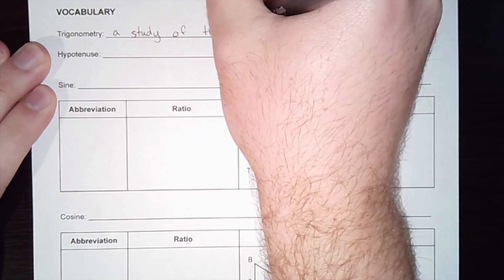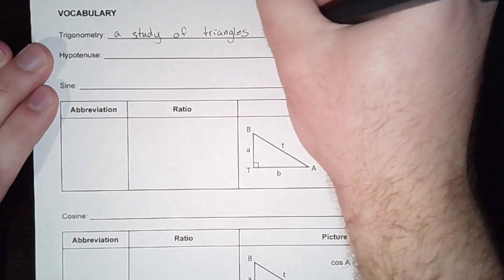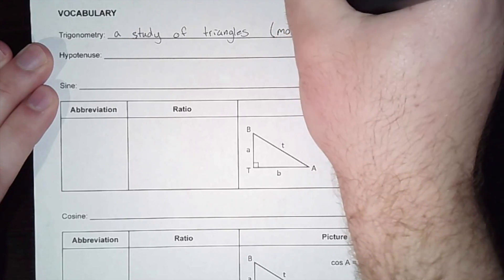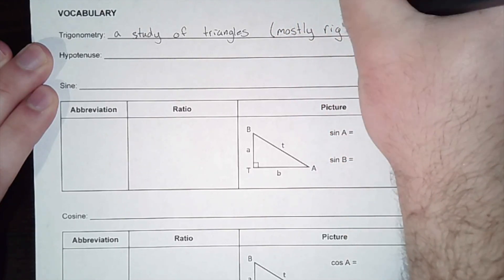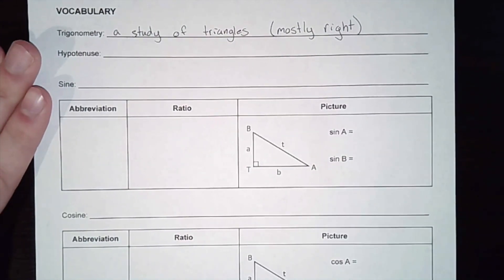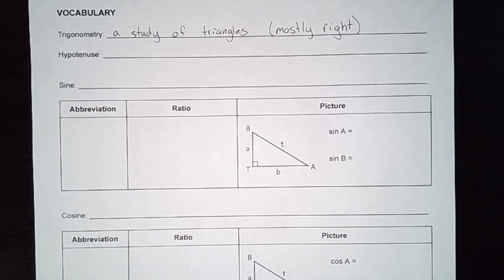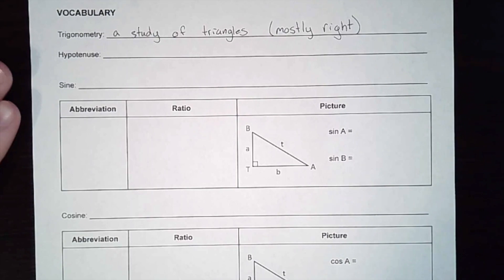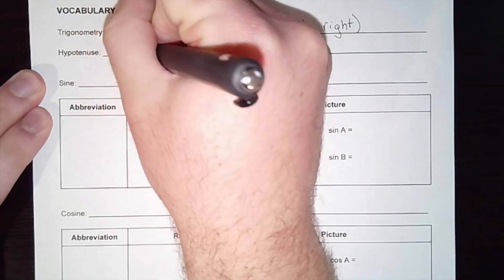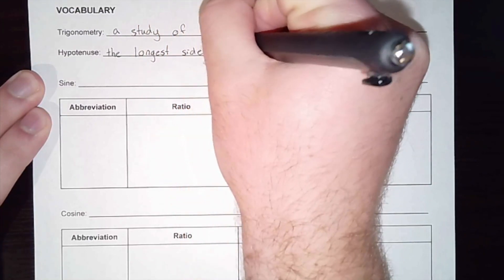We are going to mostly stick to talking about right triangles. There is a little bit of trigonometry that deals with triangles that are not right, but for the most part we are going to need right triangles in order to do this. Because we're talking about right triangles, we get this word hypotenuse again — that is the longest side of a right triangle.